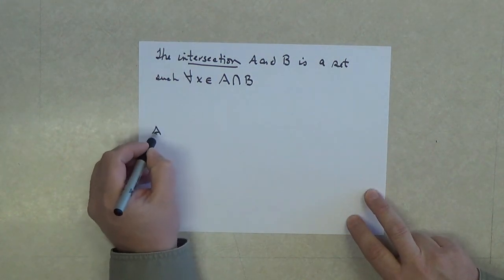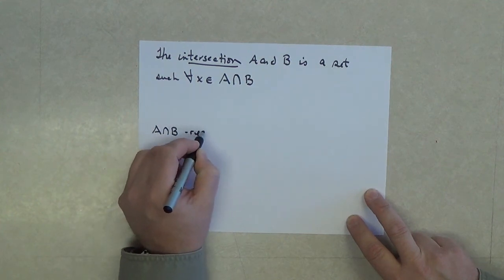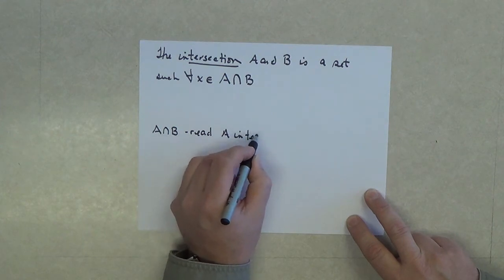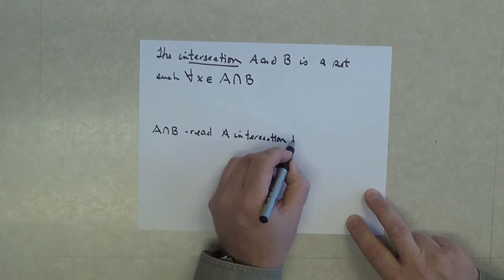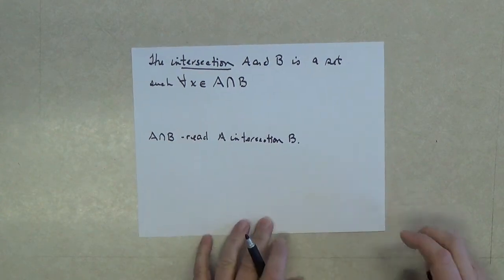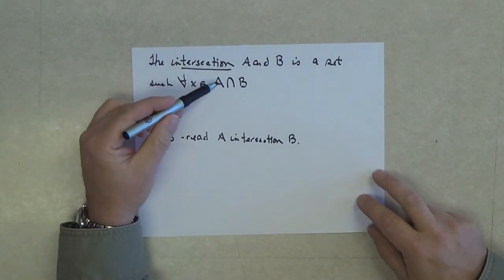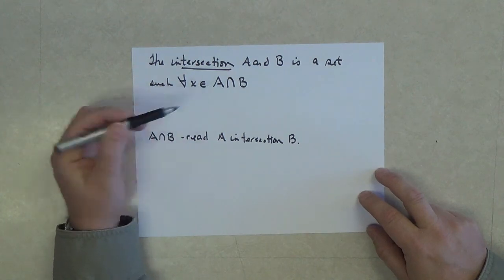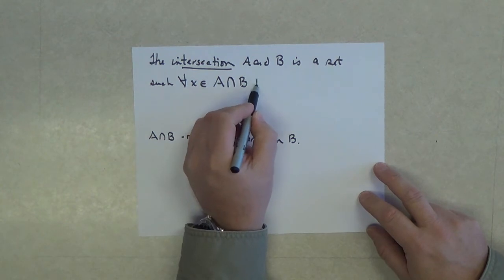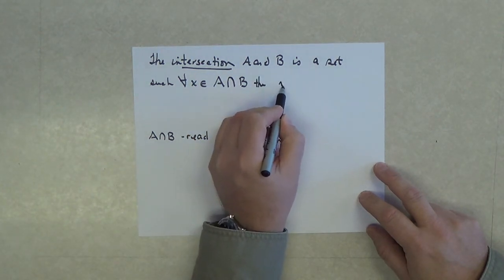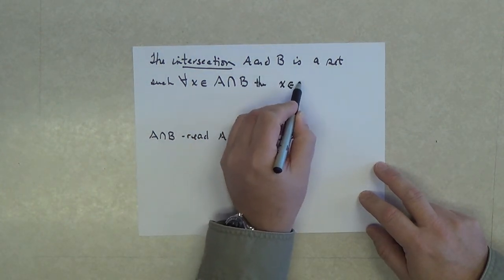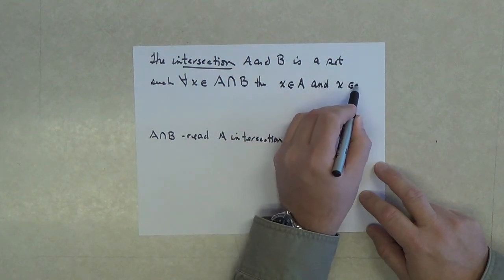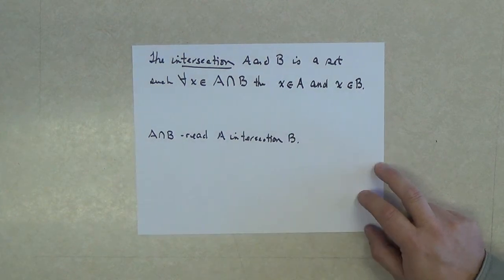The symbol for intersection is that symbol for union but turned upside down. This right here reads, and I will put this down here, A intersection B. All the X's that are elements of the A intersect B, then X is an element of A and X is an element of the set B.